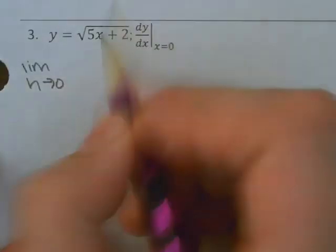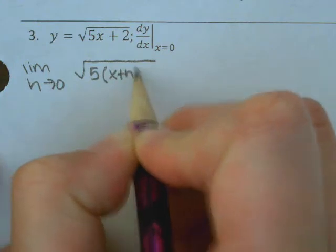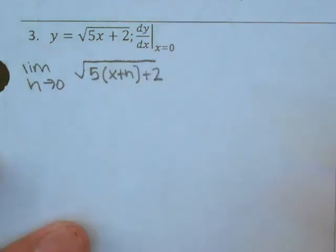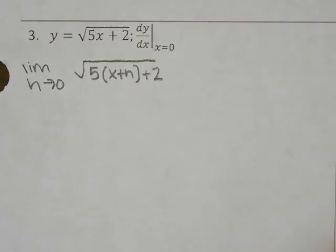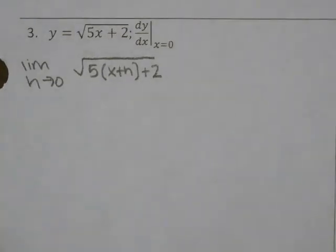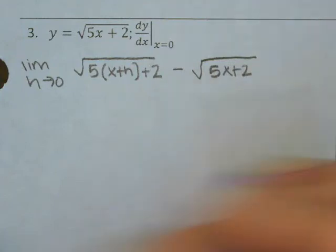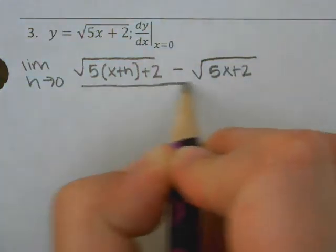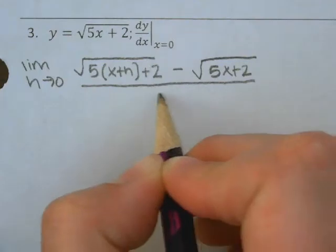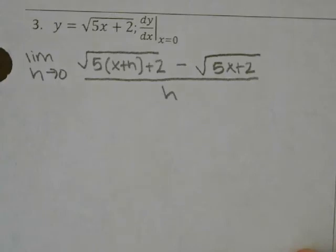So I'm going to say f(x+h) — I take my square root, and I put the x+h just in for the x. Then you minus your original equation, you minus f(x). And underneath the square root sign, you can distribute the five, but you don't necessarily need to. So I've got all of that over h.